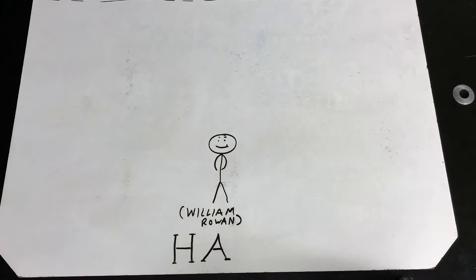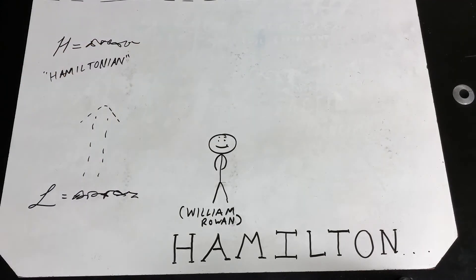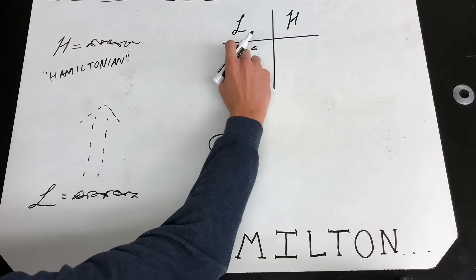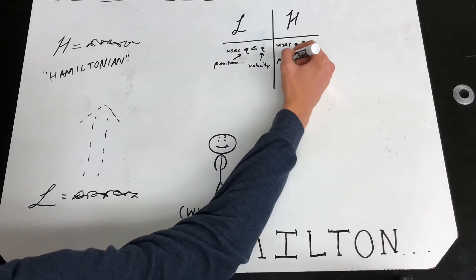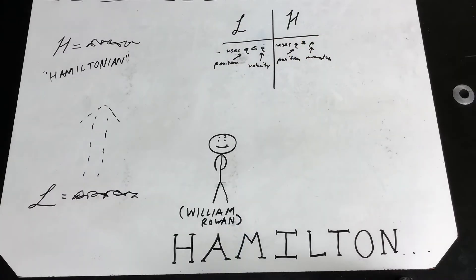Next up is Hamilton. No, not the Alexander one, the William Rowan one, who essentially took Lagrange's work to the next level. He made a different theory, where momentum and position are linked together, in an equation unsurprisingly called the Hamiltonian, as opposed to the Lagrangian, which uses position and velocity.